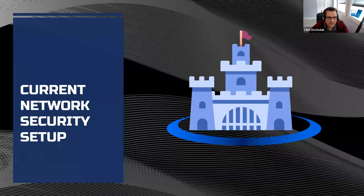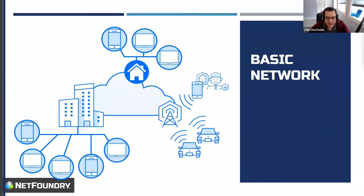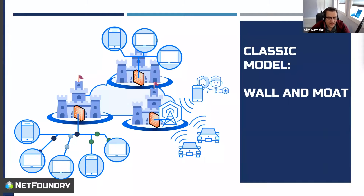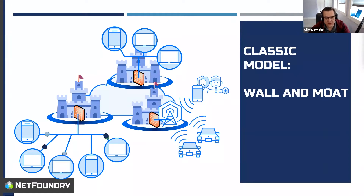Let's talk about the current security setup considered good enough for today's world. Here you can see a basic network with a primary office building, employees and devices, IoT devices, cars, users on cell phones, and users at home. I've replaced all those buildings with a wall and moat, because this is what most people think of as good enough networking security — a castle, a moat, general defenses. That moat can be breached through a drawbridge, what we might call a firewall.